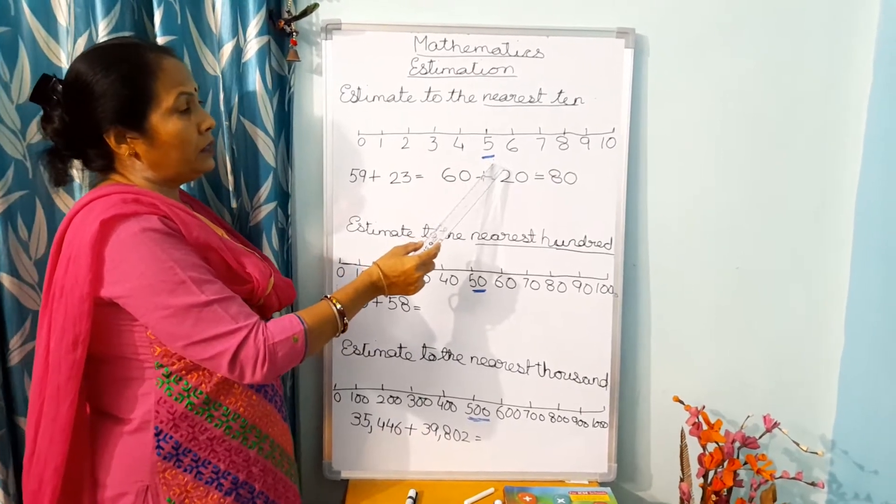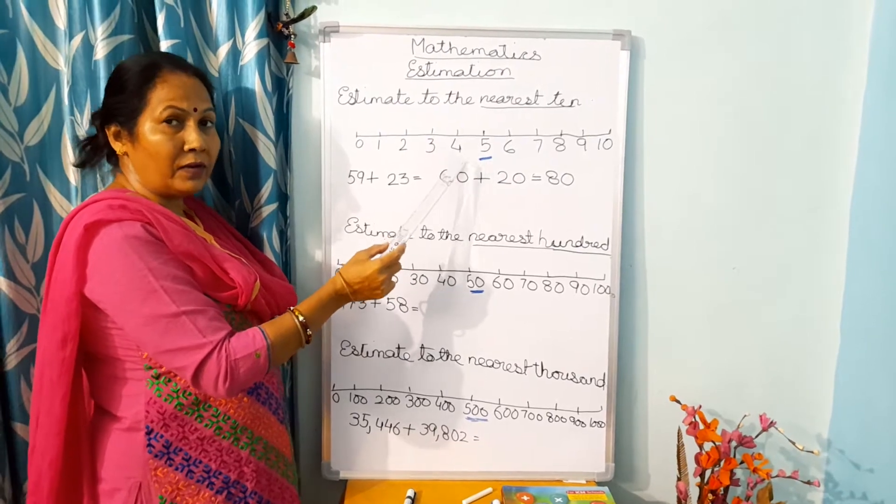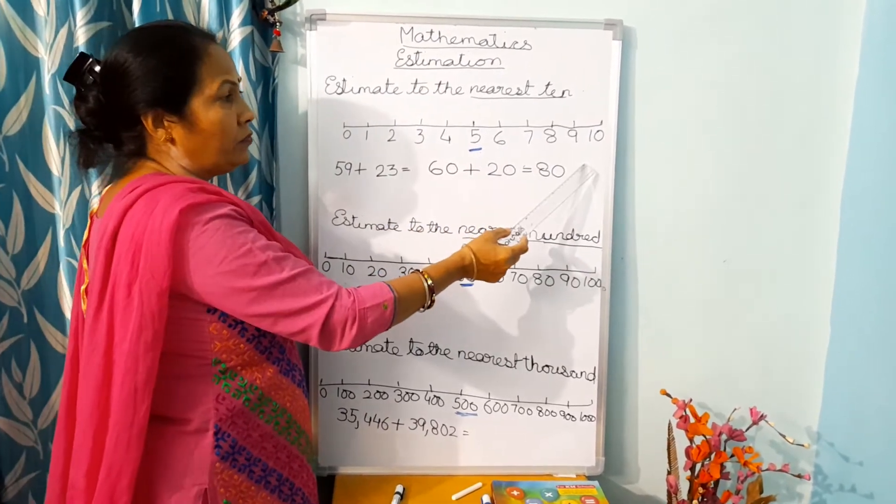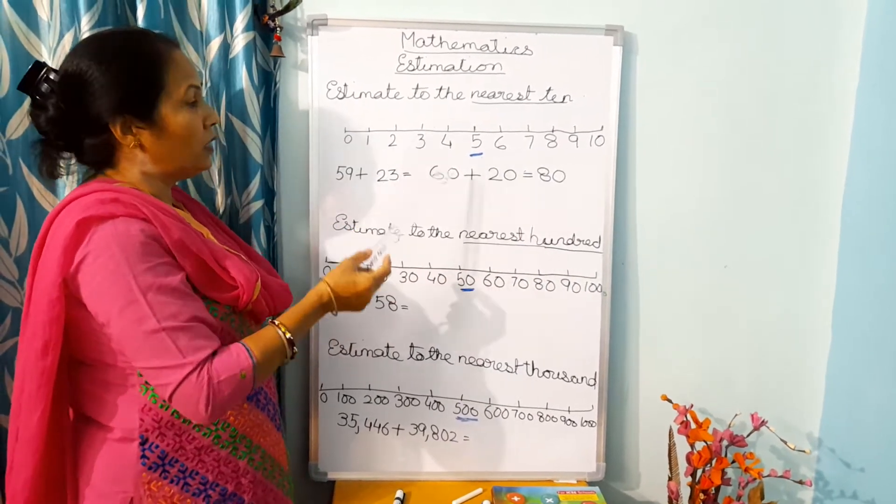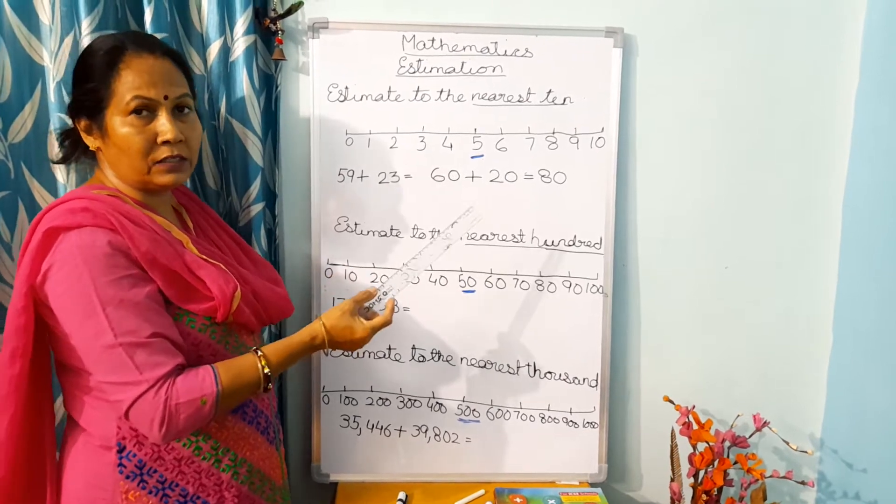So numbers before 5 have less value and numbers after 5 have more value. Now you have to estimate it to the nearest 10.